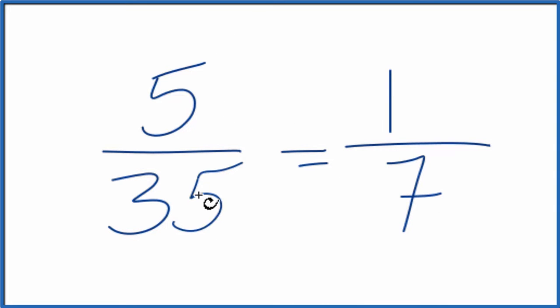So we've simplified or reduced the fraction 5/35 down to 1/7. And we can't reduce this any further. This is in its lowest form, we have our lowest terms here.